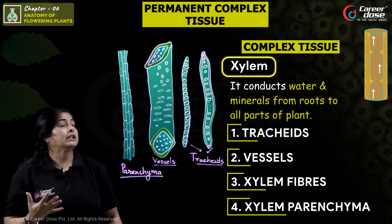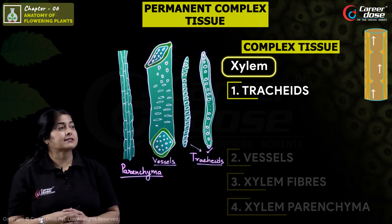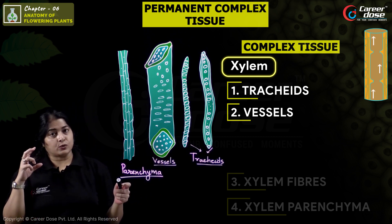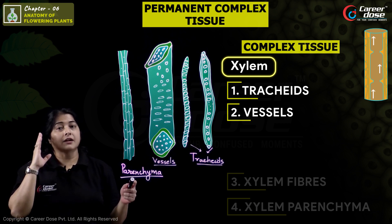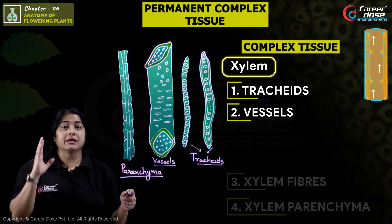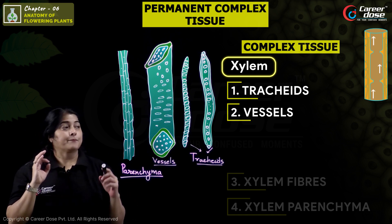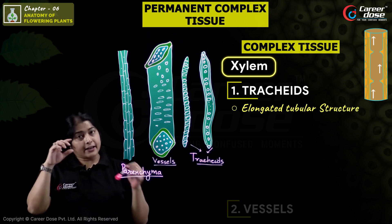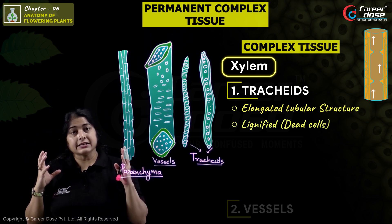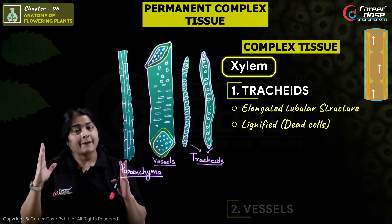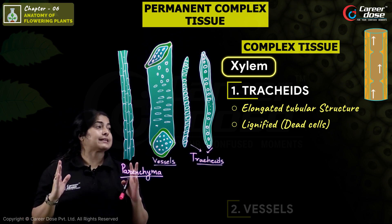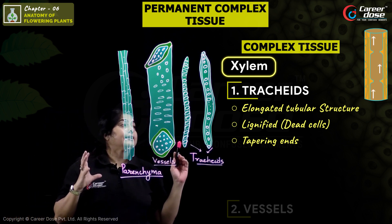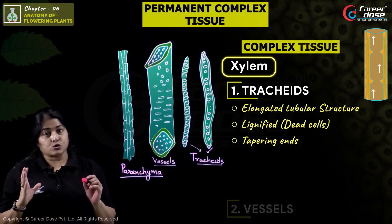The first component is Tracheids. Tracheids are elongated, tube-like structures with tapering pointed ends. They are lignified and are dead cells — the protoplasm is absent. They have lignified cell walls with different patterns of thickening on the inner cell wall, due to different arrangements of lignin deposits.